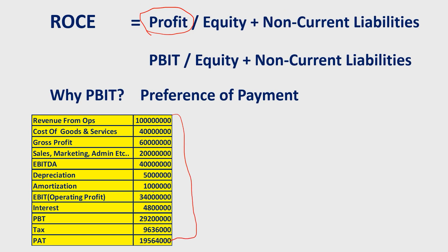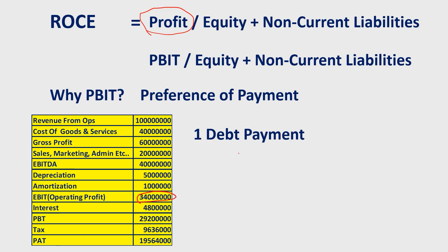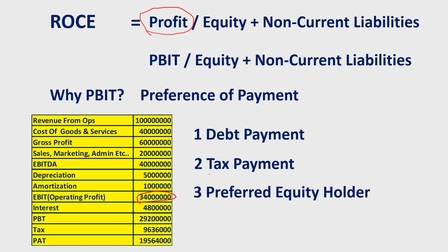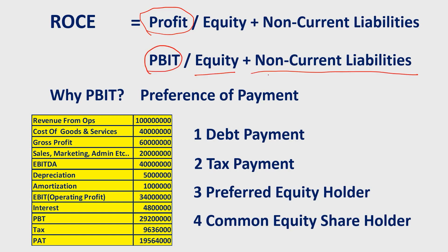If the company generates operating profit, the first payment priority goes to debt repayment — the lenders. Then, the government tax is paid. After that, preferred equity holders receive their dividend payment. Finally, common equity shareholders receive dividends. So the payment preference order is: debt lenders first, then government tax, then preferred equity holders, then common equity shareholders. We will have both interest payment and tax payment considered in the ROCE calculation.